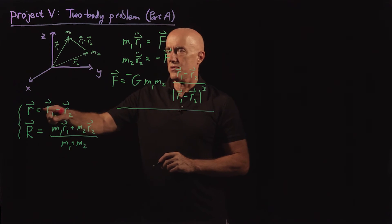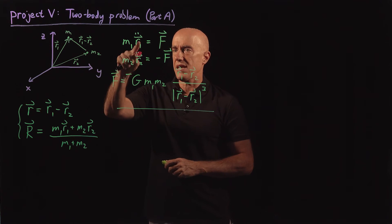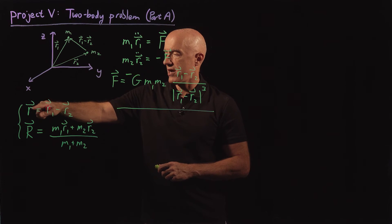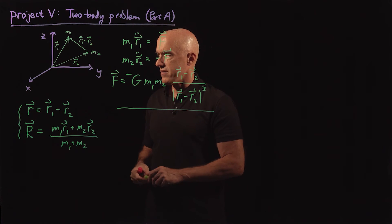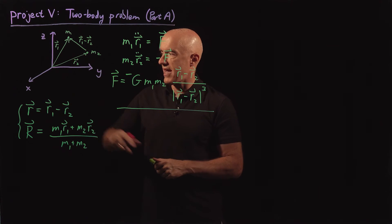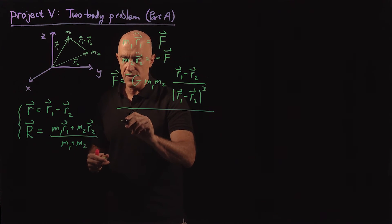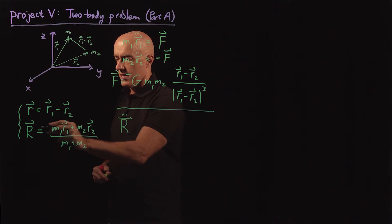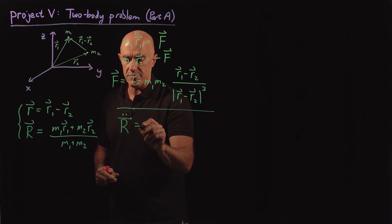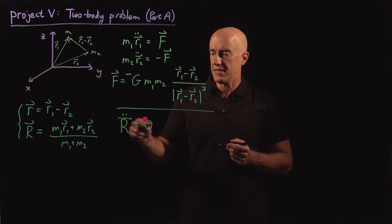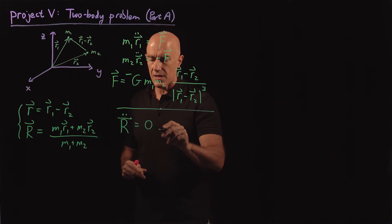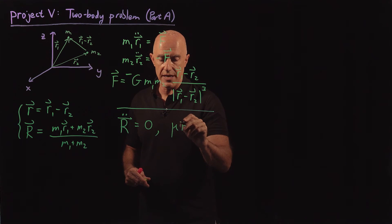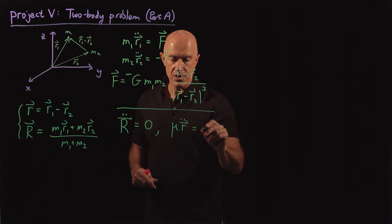Then what we can do is we can eliminate r1 and r2 in this expression in favor of little r and capital R and write the differential equation for little r and capital R. If I do that in my notes, I won't do that here. What we find is capital R double dot, the acceleration of this center of mass coordinate system, is always equal to zero. That will turn out to be a great simplification. And we also find that this reduced mass mu times r double dot is equal to f.